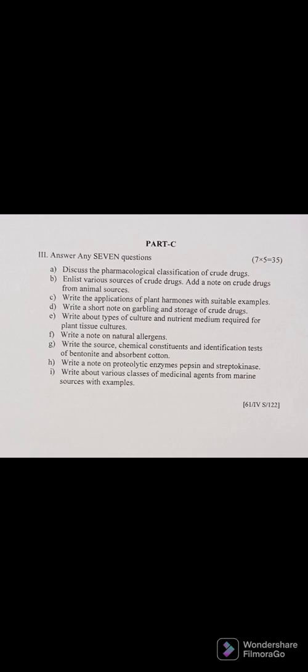Part C Question 7: Write the source, chemical constituents, identification test, and uses of bentonite and absorbent cotton. For absorbent cotton, write about Gossypium — what part is used and what family it belongs to — its composition, chemical constituents, and uses. Uses of cotton include surgical cotton in surgery, tracing purposes, and as a filtering medium.